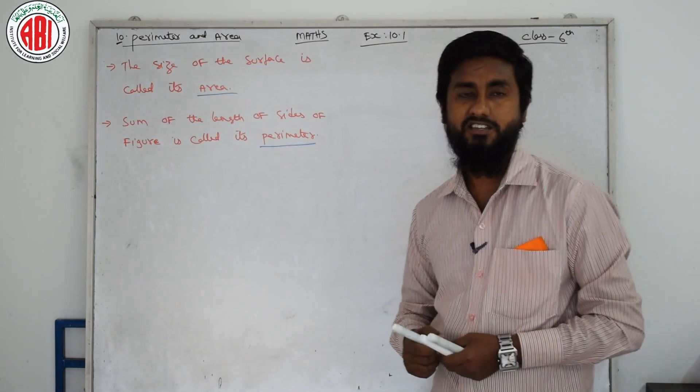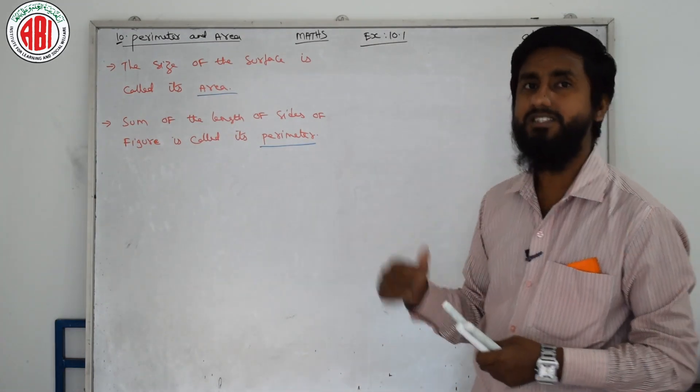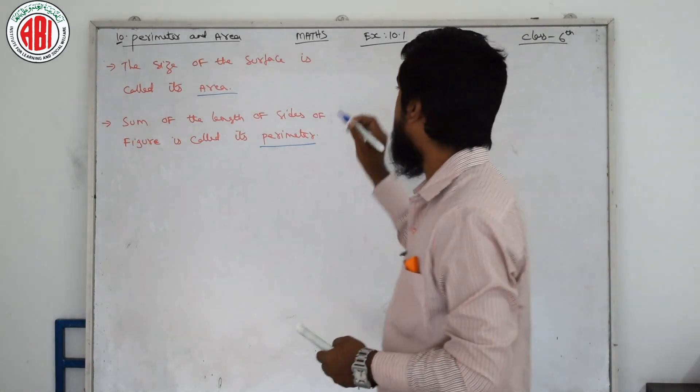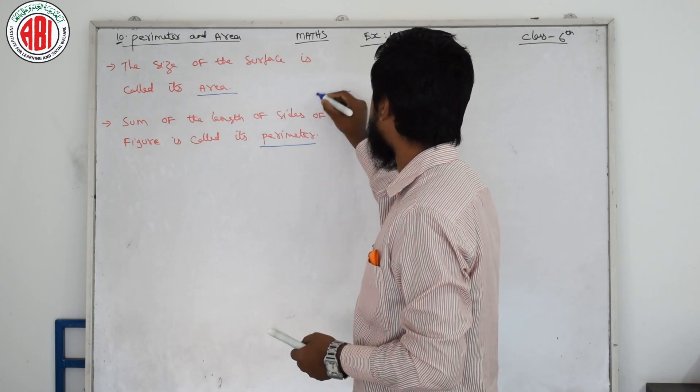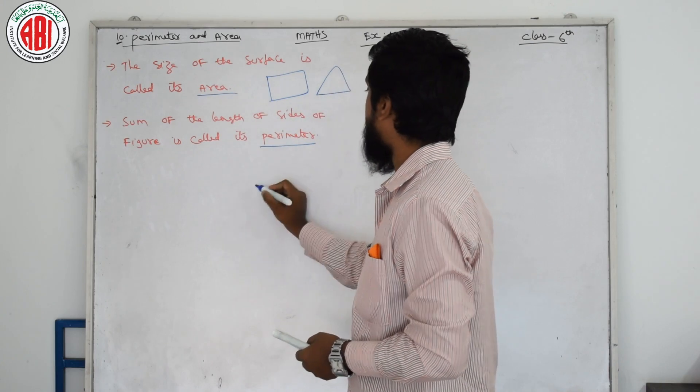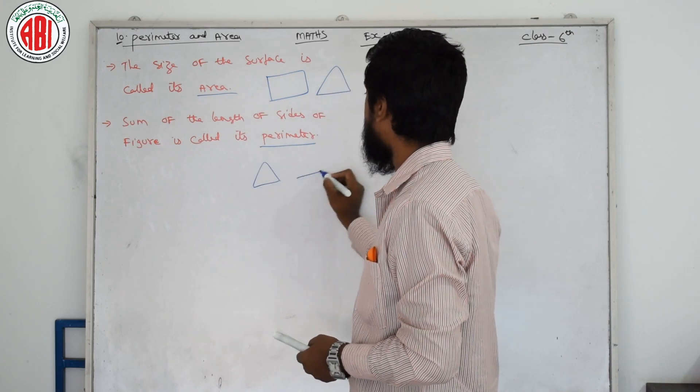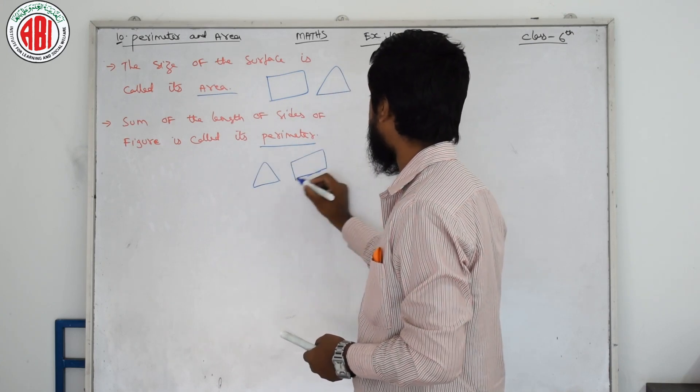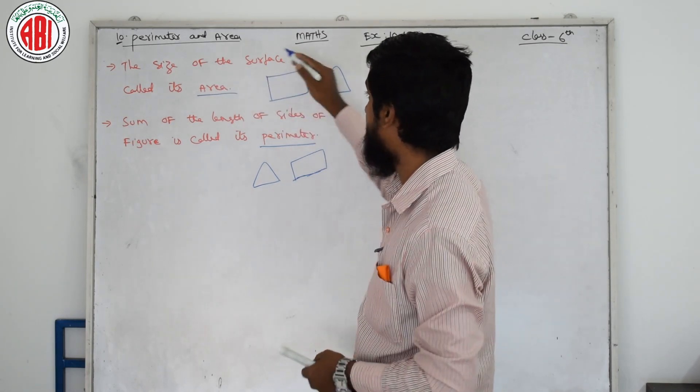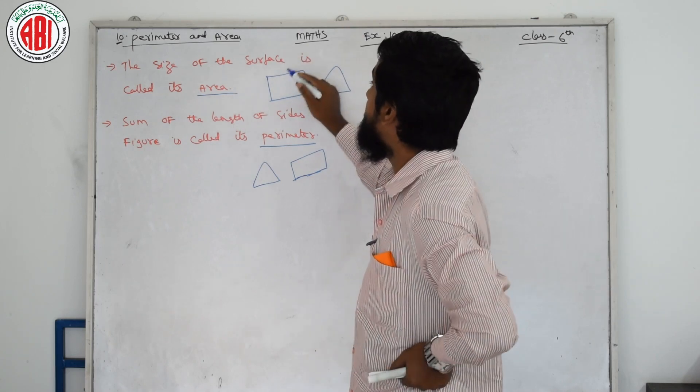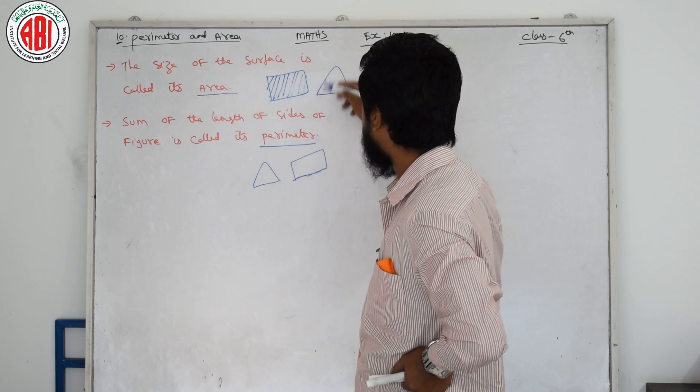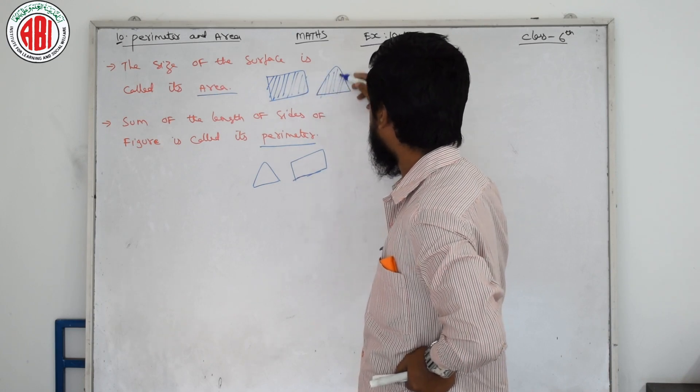Now explanation in Hindi. I am Sayyad Rashid, teaching 6th class Math. Chapter No. 10 is Perimeter and Area. Area is nothing but the size of the surface. The size of the surface is called Area. That means, the surface size is nothing but Area. The size of the surface is nothing but Area.